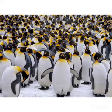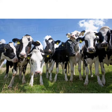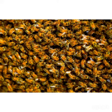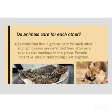Penguins huddle together to keep themselves warm. Grass eaters like cow, deer and zebra move in groups for safety. Insects like ants, termites and bees live in huge colonies where each one has a special job to do.